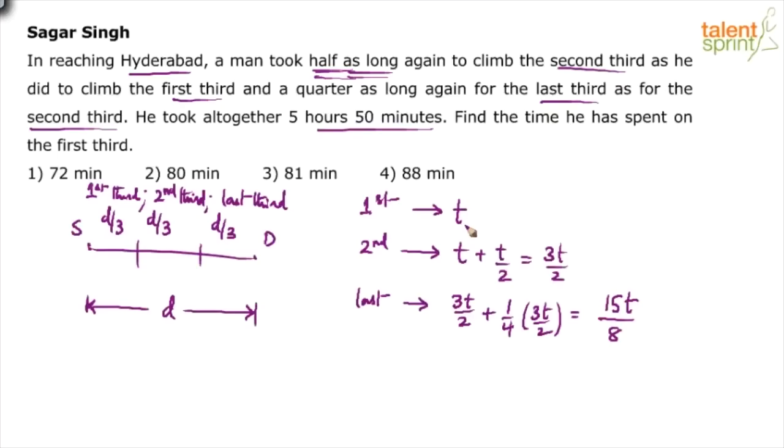So in the first third, he has taken t minutes. In the second third, he has taken 3t by 2 minutes. And in the last third, he has taken 15t by 8 minutes. The total time is 5 hours and 50 minutes. Let's convert this to minutes completely. So 5 hours is 300 minutes and 50 minutes, 350 minutes.